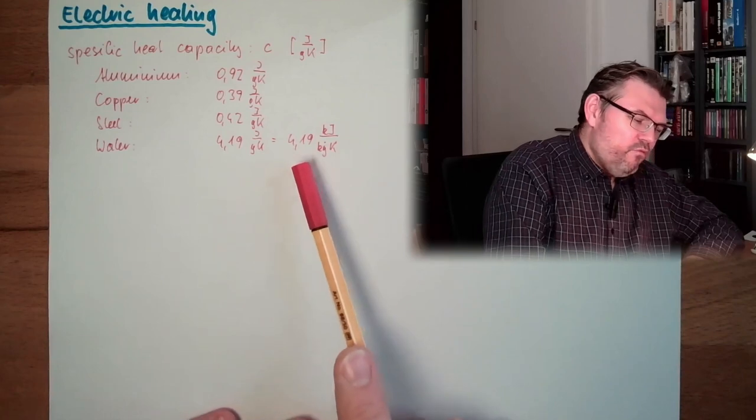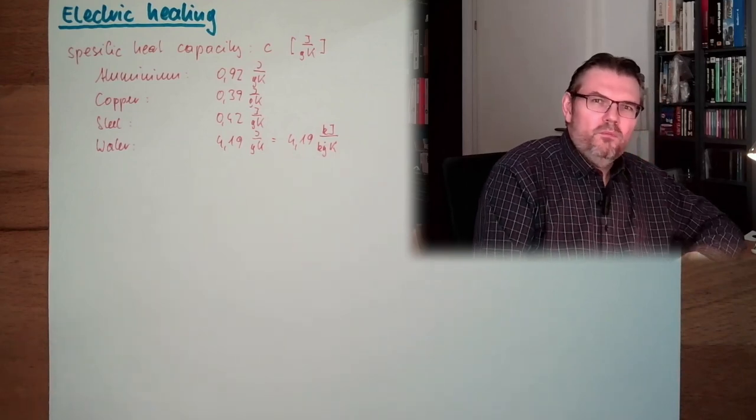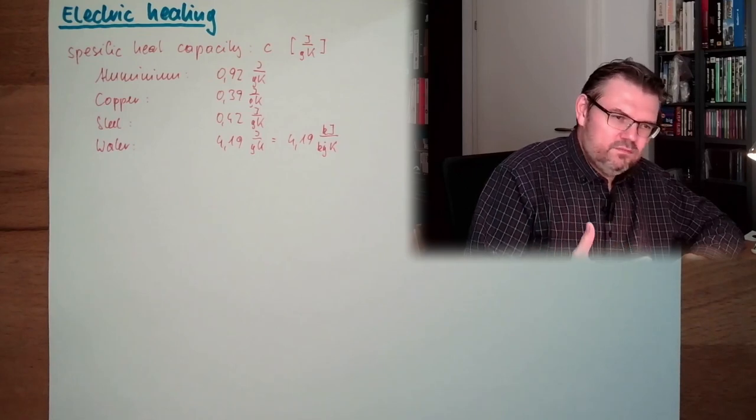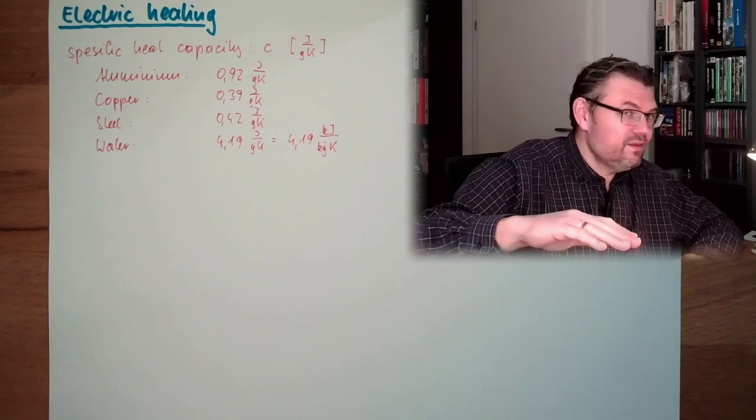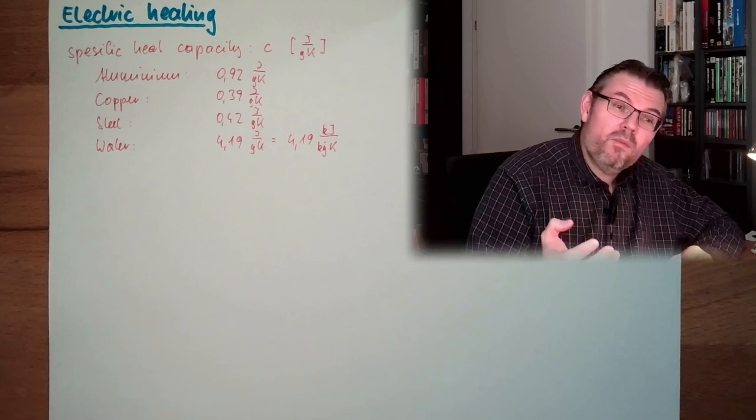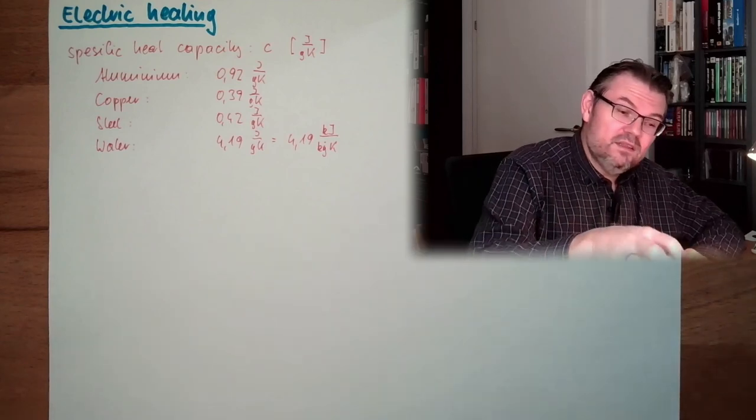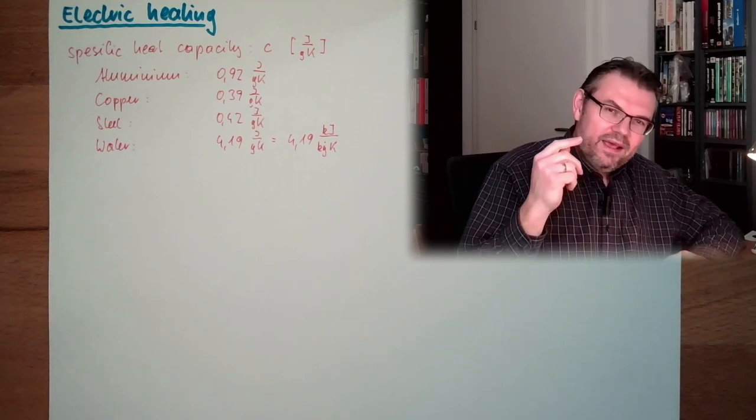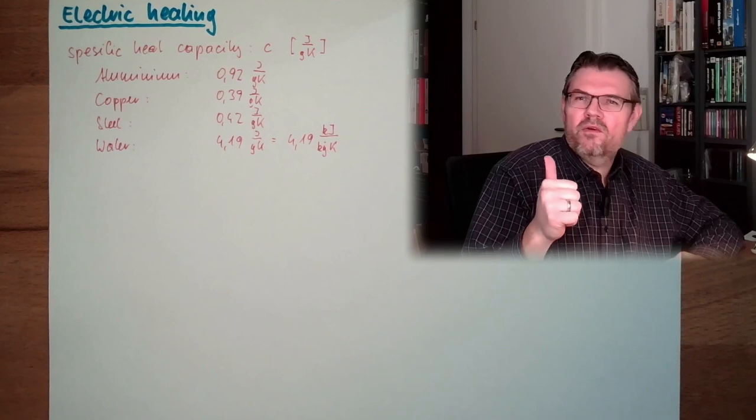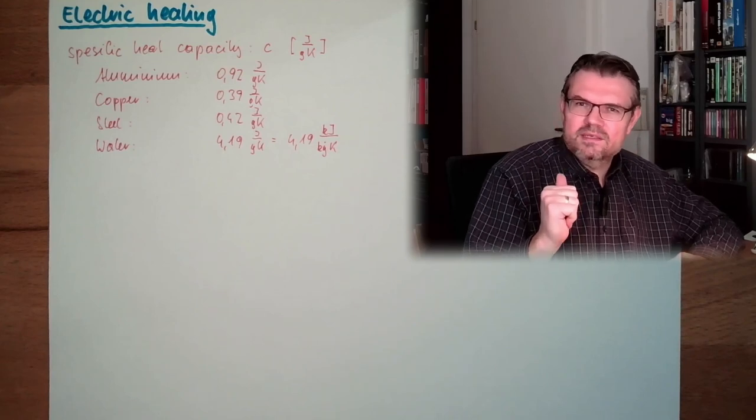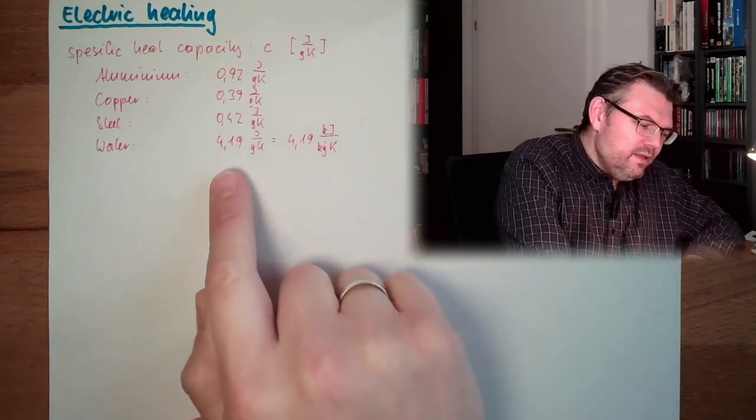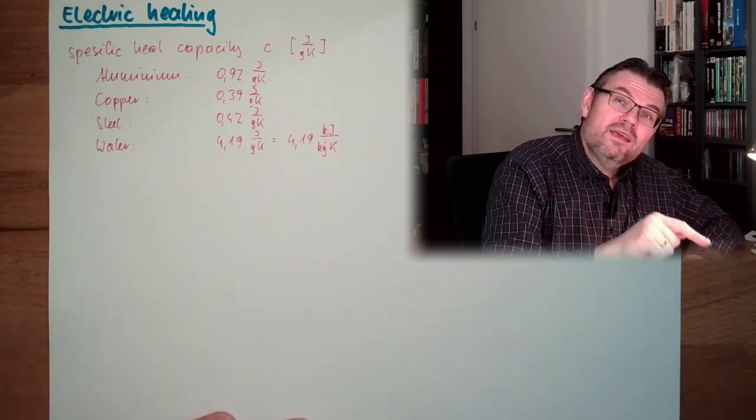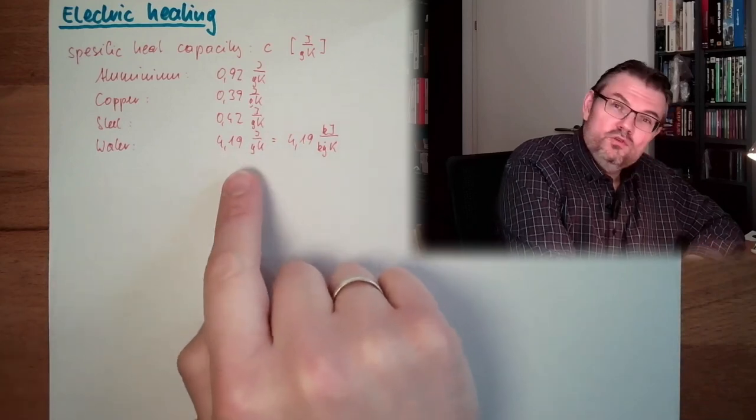And this is actually 4.2 KJ. Probably you have already seen on the back of sweets or how much kilocalories this table of chocolate is. And a calorie was defined to heat up one gram of water by one degree Celsius.